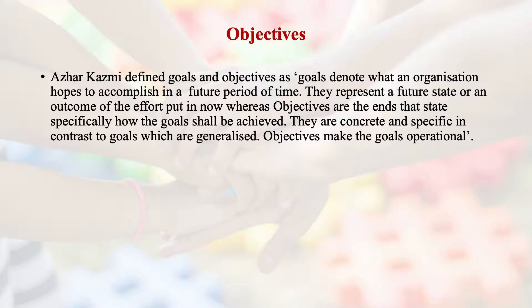Azarkazmi defines goals and objectives as follows: goals denote what an organization hopes to accomplish in a future period of time, representing a future state or outcome of current effort. Objectives are the ends that state specifically how goals should be achieved — concrete and specific, in contrast to goals which are generalized. Objectives make the goals operational. Goals are general guidelines illustrating what your organization wants to accomplish in the future, while objectives include strategies or steps implemented to attain those goals. Goals are qualitative whereas objectives are quantitative.